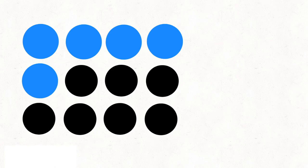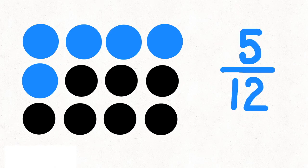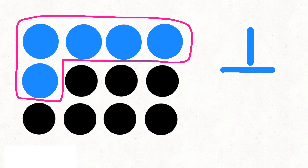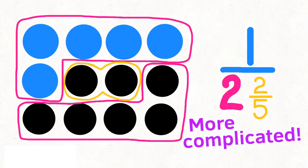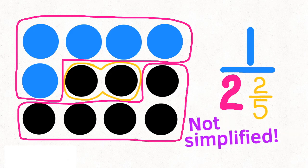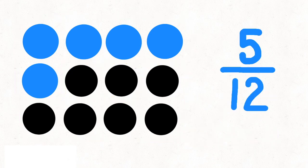This time, let's color 5 of the dots. That means that I've colored 5 out of 12 of the dots. I've circled one group of 5. 5 goes into 12 a little bit more than 2 times. You can see that we have 2 dots out of 5 dots left over, so this starts to get more complicated. It's not making it simpler, so it's not simplified. Since 5 doesn't go into 12 evenly, we just call it 5 twelfths.